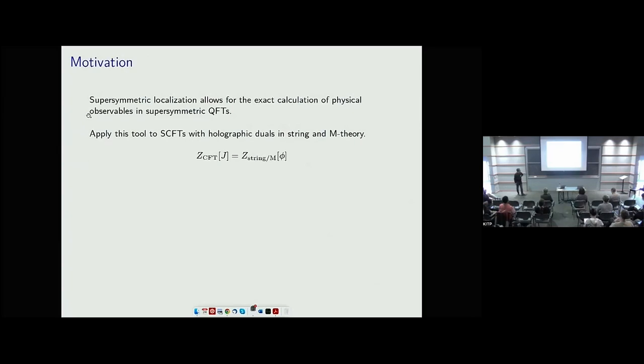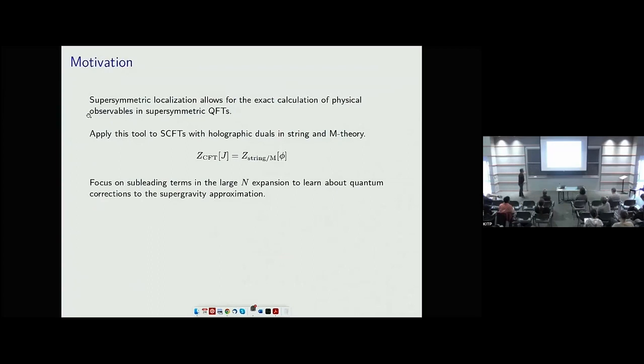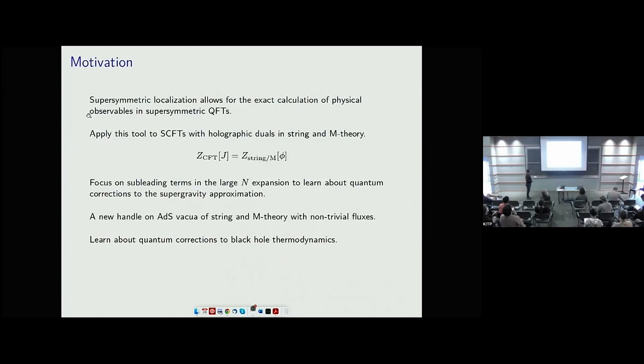The motivation is kind of simple: we all know that Z should be equal to Z, and this was the motivation for many of the speakers before me. The whole idea of the talk is to explore Z=Z in the context where the Z of the CFT with some sources can be computed exactly by supersymmetric localization, and exploit this in the large-N limit to try to learn something about the other Z. This should give us some control on how to go beyond the leading supergravity approximation, maybe learn about AdS vacua with fluxes, and maybe learn about black holes.